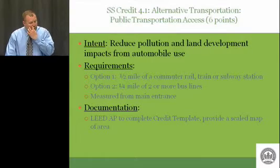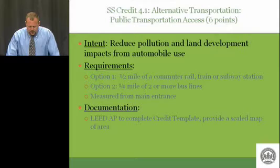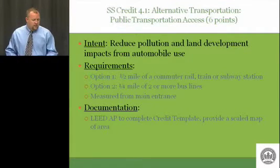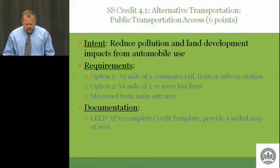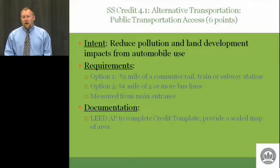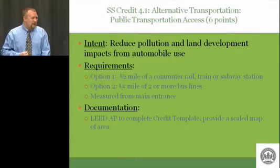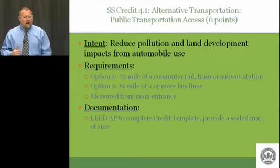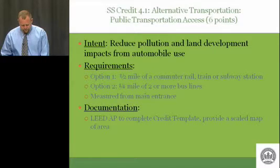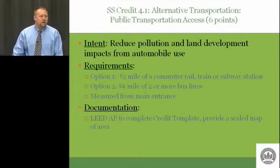Alternative transportation - SS Credit 4.1. The intent is to reduce pollution from land development impacts on non-motorized use. There are two options: Option One is being within a half mile of a commuter rail, train, or subway station - which applies to about zero sites in Iowa since there are no subways. So we go to Option Two: within a quarter mile of two or more bus lines. Note that a school bus could count as one of these lines. In Ames, one bus stop where the red and yellow routes both stop counts as two bus lines.